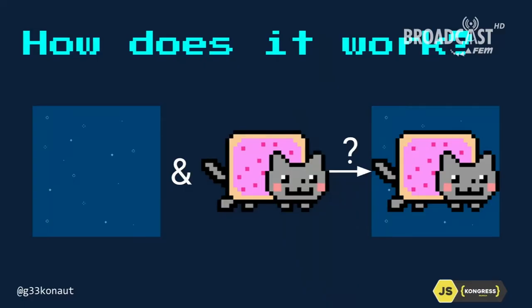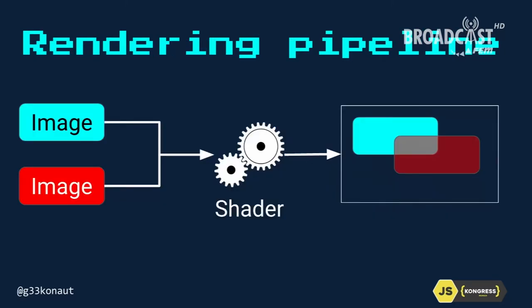How do you actually program compositing? There's one simple way: take this color and this color and put them on top of each other. If they're transparent, keep the original color; if not, it's the new color. That's a valid blending mode. But there are more interesting ways. Computers have a rendering pipeline, and in a very simplified form: two different images go in, a shader runs, and produces an image on screen. So what exactly is a shader?